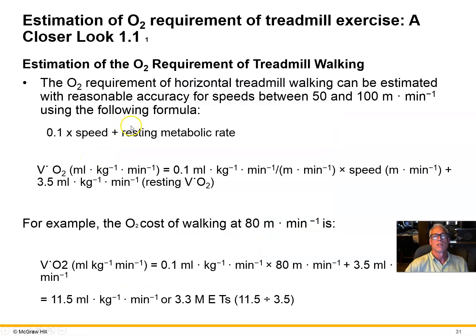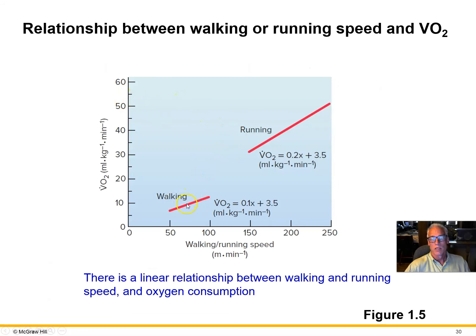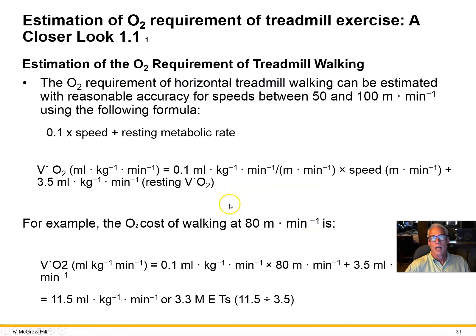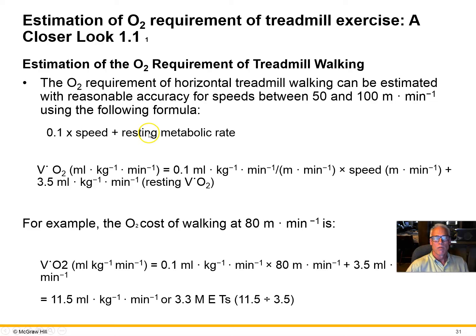That linear relationship allows us to use a simple linear equation to figure out the energy cost for a particular walking, running, or cycling event. For treadmill walking, we can estimate oxygen consumption by taking the speed someone is walking, multiplying by 0.1, and adding the resting metabolic rate, and we'll get a pretty accurate assessment of oxygen consumption.